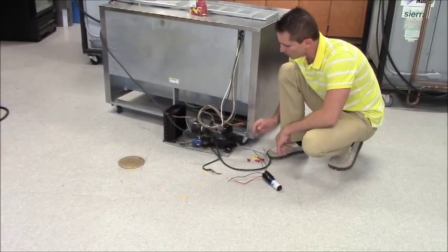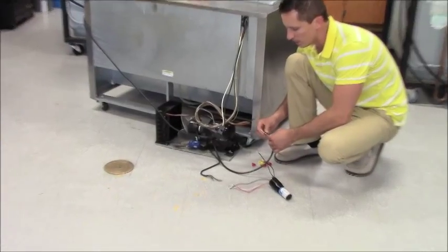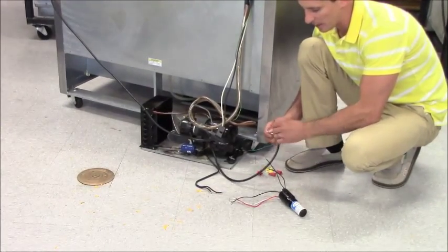So the very first thing we're going to do is remove our start components, which are already removed, and there's going to be two wires going to them. Those two wires are 120 volts - there's going to be a black and a white.